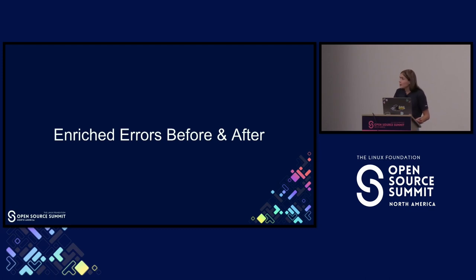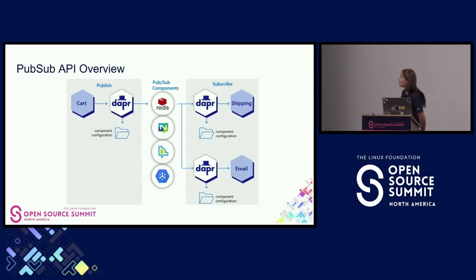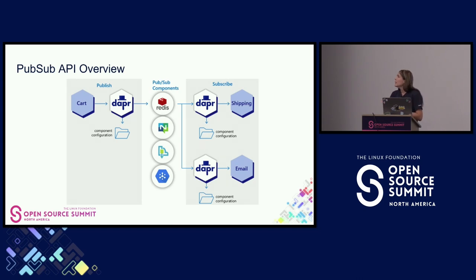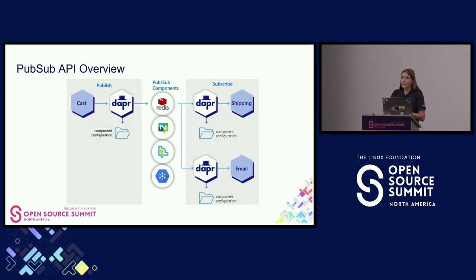Now let's look at our enriched error — both a before and an after — using our pub sub API. There's a high-level overview of a simple example. On the left, we see a Dapr-enabled cart app publishing data to our message broker. Let's say we're using Redis in the middle, which is a Dapr pub sub component. And on the right, we have a shipping Dapr-enabled app where Dapr is routing that data back to our app. You can already see there are a few possible areas where errors could occur, which comes with the territory of distributed systems, and highlights why it's important to enrich our errors.